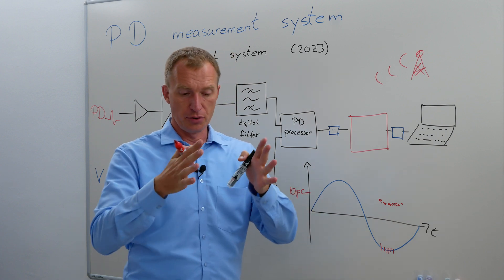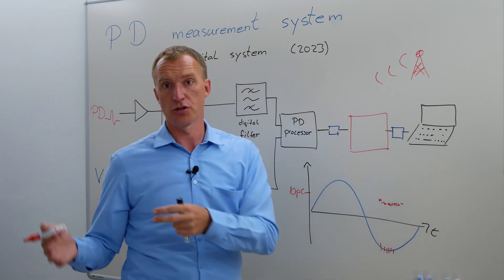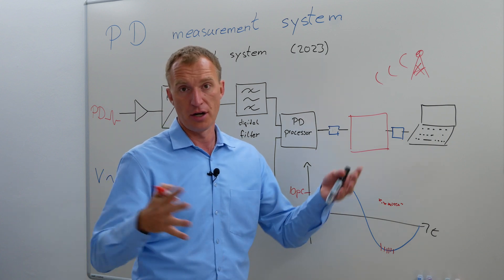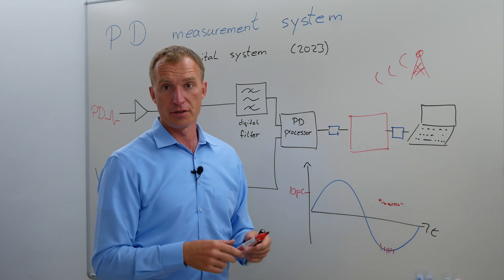And there are quite a lot of people out there who are able to look at the patterns and actually distinguish and say, okay, this is a corona, this is a surface discharge, it's an internal discharge, or something like that. And these are one of the advantages of a digital system.